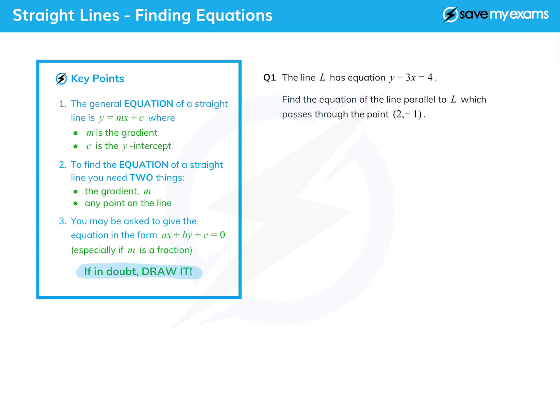Let's look at this first question. We're given the equation of a line l, which is y minus 3x equals 4, not quite in y equals mx plus c form but we can put it there very easily. We're asked to find the equation of the line parallel to l.